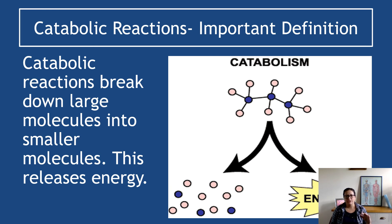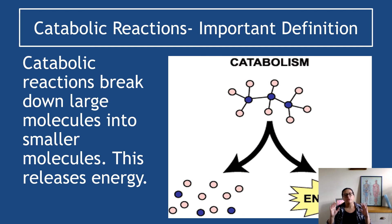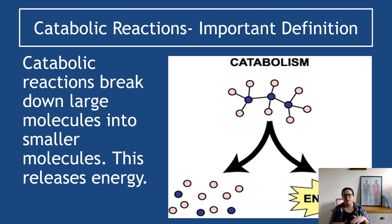A catabolic reaction breaks down large molecules into smaller molecules and releases energy. We start with one big molecule and end up with smaller molecules plus energy as a side product. Not every metabolic pathway is exclusively anabolic or catabolic — it can have both anabolic and catabolic stages. Aerobic respiration, for example, has both catabolic and anabolic stages, but overall the process is catabolic because it breaks stuff down and releases energy.